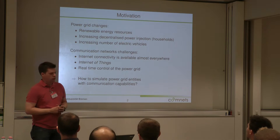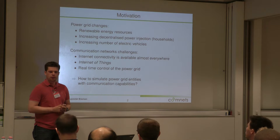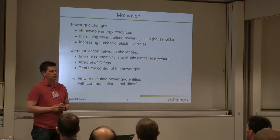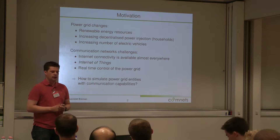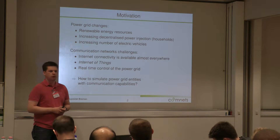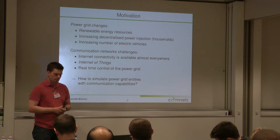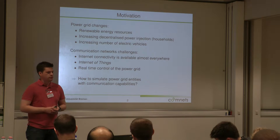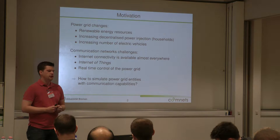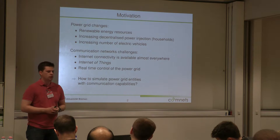The motivation in general: our current power grid is changing. We get a lot of renewable energy resources and an increasing number of decentralized power sources — households with photovoltaic systems or combined heat and power units, and an increasing number of electric vehicles which need a lot of power but could also be used to stabilize the grid. On the other hand, communication networks are changing too. We have internet connectivity almost everywhere and the Internet of Things, which we could use to do real-time control of the power grid.